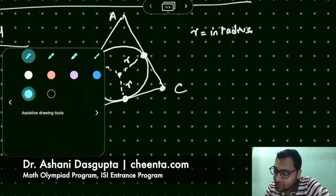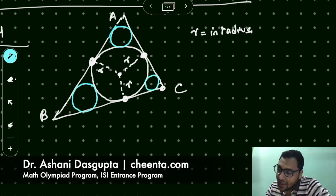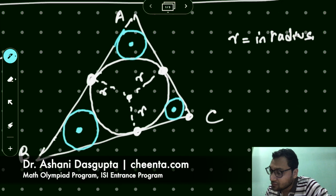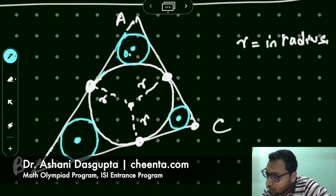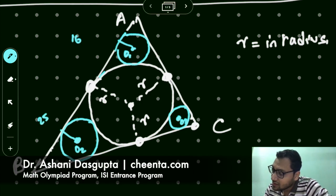Now it's also given that there are three other circles. One of them here, one of them here and one of them is here. And the radius, so I'll just give names to the centers. Let's call this one O1, O2 and O3. And the radius is given to be 16, 25 and 36. So the three radii are given of the three red circles.